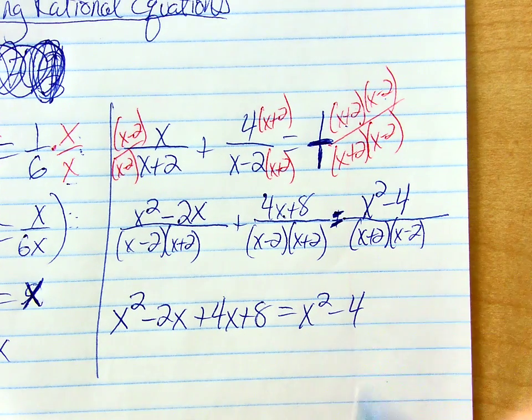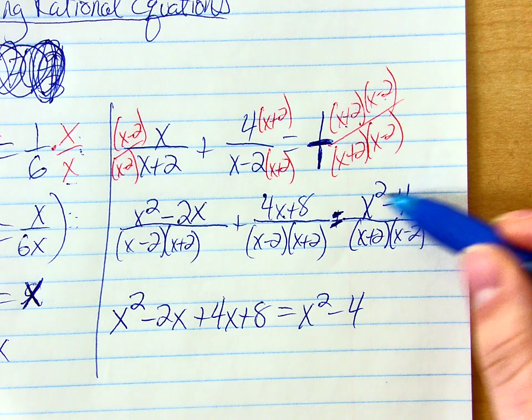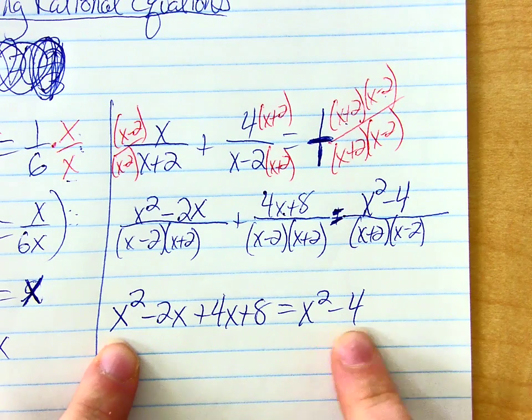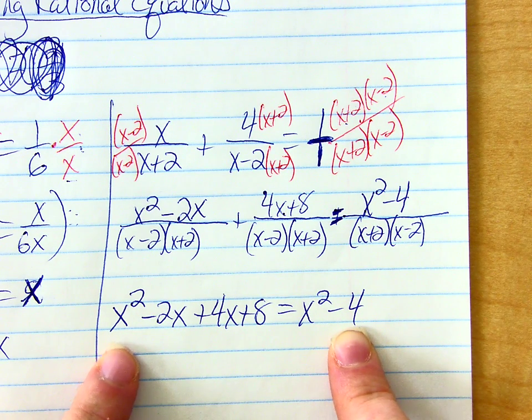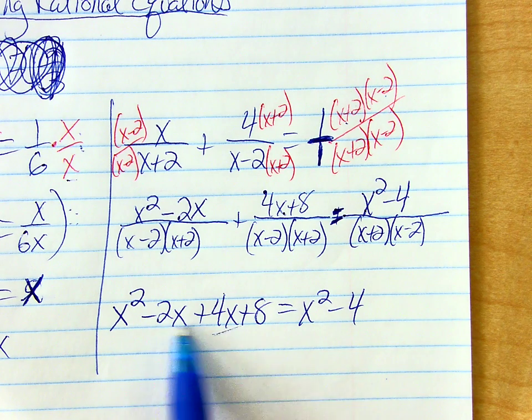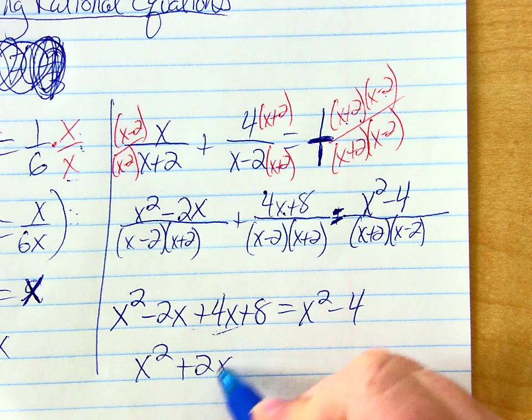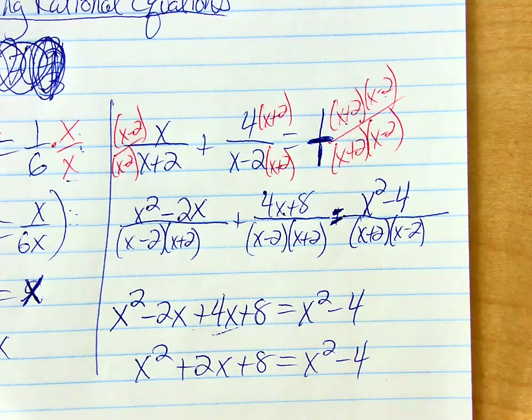So the equation that I'm left with is now just the numerators. x squared minus 2x plus 4x plus 8 equals x squared minus 4. So if you had not foiled this together, you would have to do it right now anyway. Because look what I have. I have an equation that I need to solve. How would you solve this? Yeah. Well, first I can combine some like terms over here. So it would be x squared plus 2x plus 8 equals x squared minus 4. Now what do you want to do?